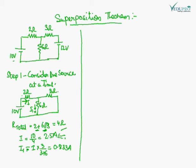Now, what is I1 if we apply the current division formula? I is the current source. So I into 3 upon (3 plus 6) is the formula. After using the current division formula, we get I1 equal to 0.833 Ampere. Now we will consider the second source.